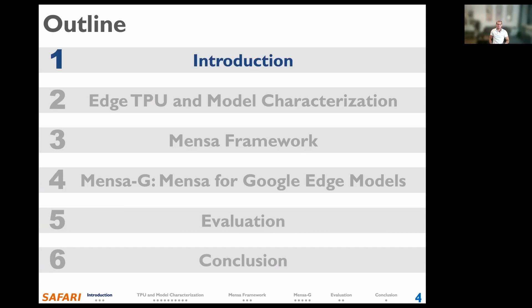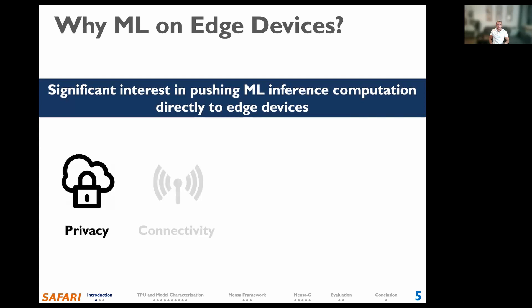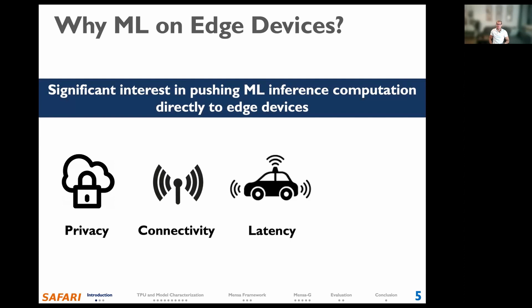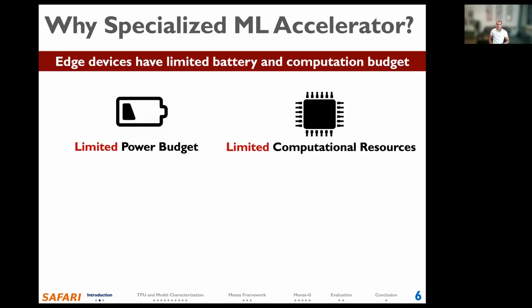There is large interest in executing machine learning tasks directly on edge devices, as opposed to sending them to the cloud. There are several reasons: it's better from a privacy perspective, it allows you to run inference even without internet connectivity, it enables much faster inference for latency-sensitive applications like autonomous cars, and you are no longer limited by network bandwidth. However, these edge devices have limited battery and computational budget, making it very challenging to run resource-intensive machine learning tasks directly on them.